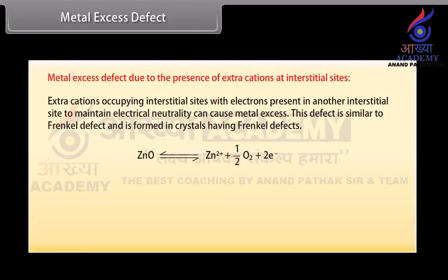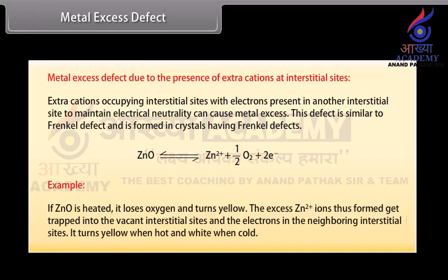Metal excess defect can also occur due to the presence of extra cations at interstitial sites, with electrons present in neighboring interstitial sites to maintain electrical neutrality. This defect is similar to Frenkel defect and is formed in crystals having Frenkel defects. For example, when ZnO is heated, it loses oxygen and turns yellow. The excess Zn²⁺ ions get trapped into vacant interstitial sites. It turns yellow when hot and white when cold.